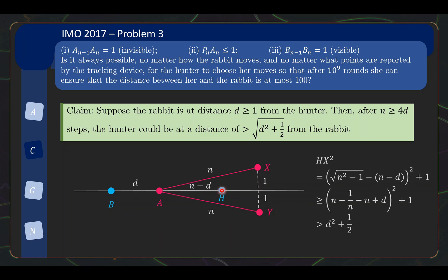So, HX squared is simply this squared plus one squared. And this distance, you can very quickly find out using Pythagoras theorem as well. N squared minus one squared, square root of that, then you subtract N minus D. So, this is the expression here. So, once you have this, it's just basic algebra that I won't go through to show that as long as N is bigger than or equal to 4D, then HX squared is bigger than D squared plus half. Remember, I made no assumption on what is the best strategy for the hunter. If the hunter chooses some other strategy that ends up H being not this specific point, then max of HX, HY is going to be even larger. So, this bypasses all the loopholes about arguing what is the best strategy for the hunter. So, do take note of that.